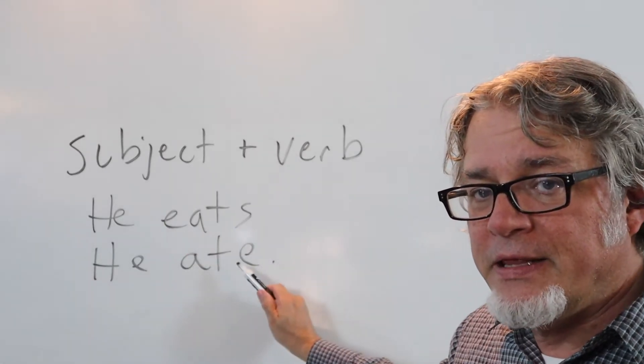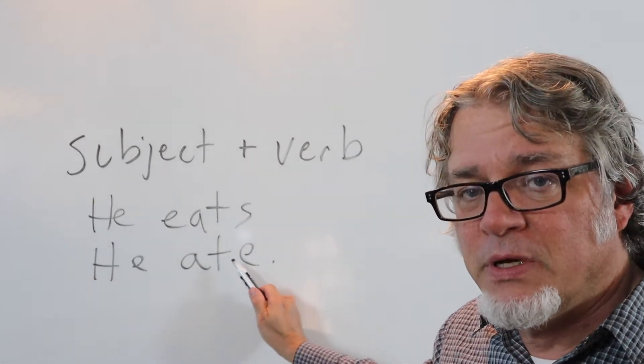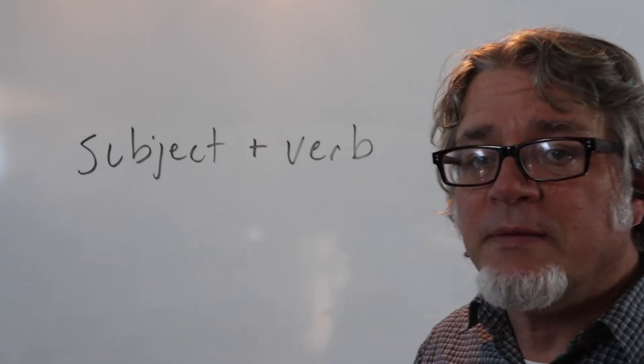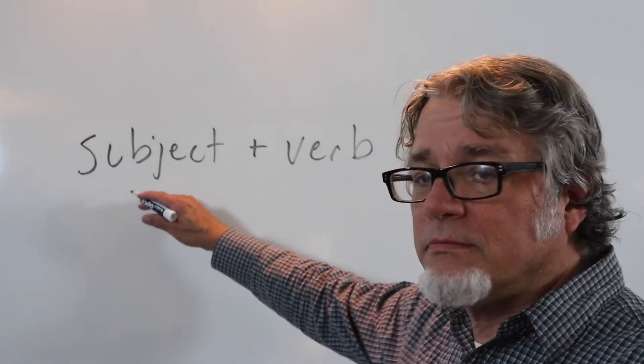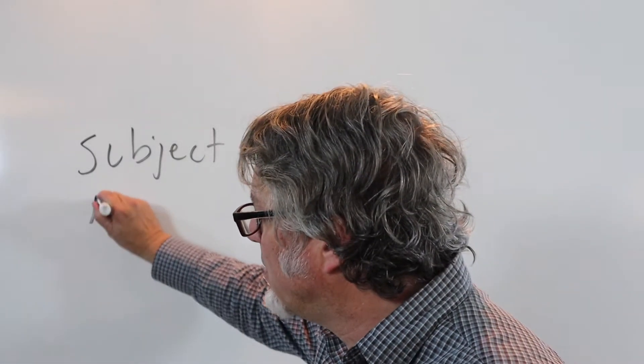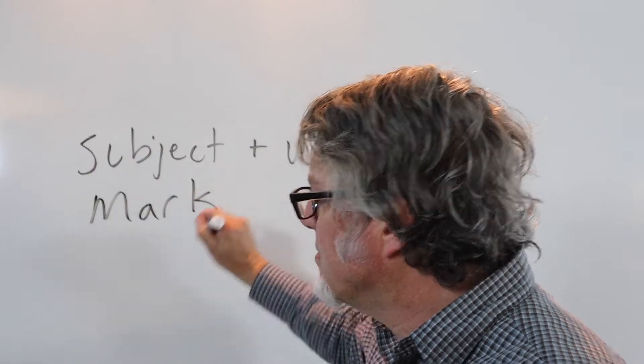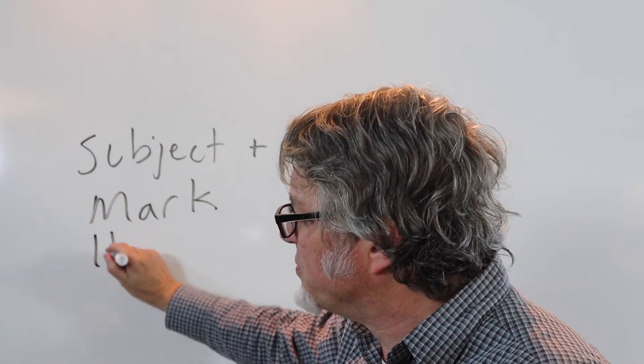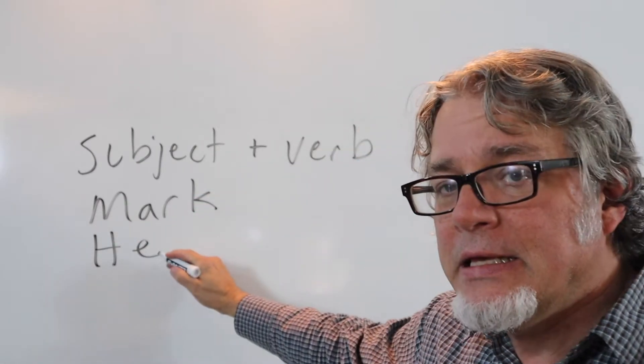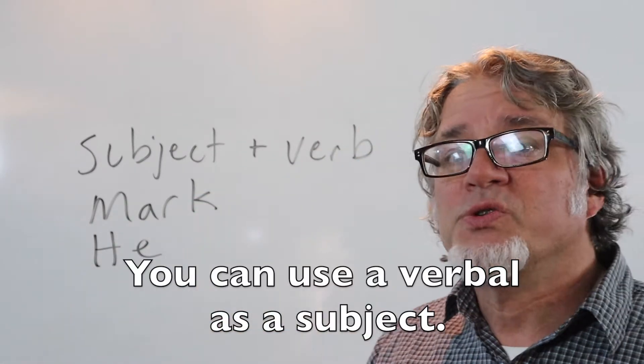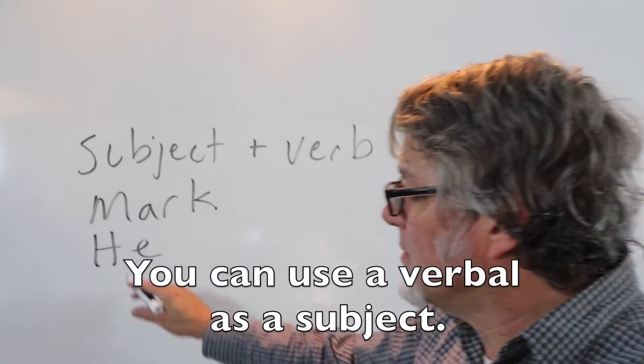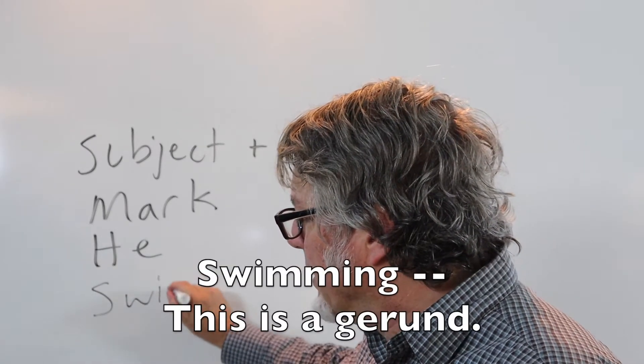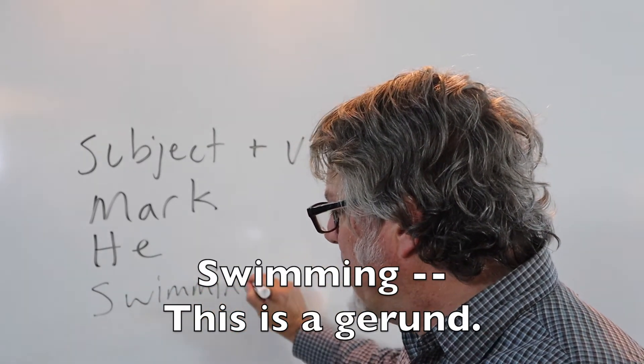Here's the subject and then here's the verb. A subject can be a noun, like a person, for example, if we use the word Mark, the name of a man, or the pronoun that represents a man, he. Or you can use a verbal as a subject, for example, swimming. This is a gerund.